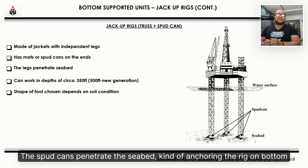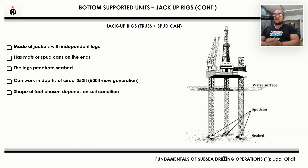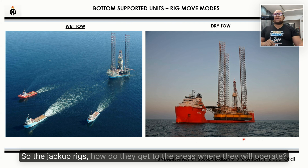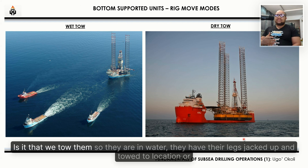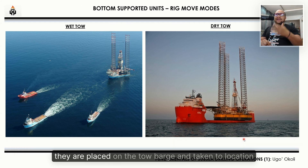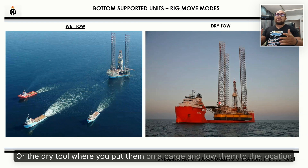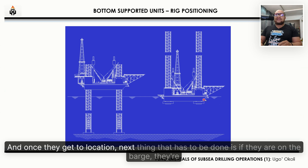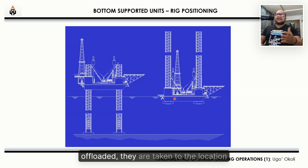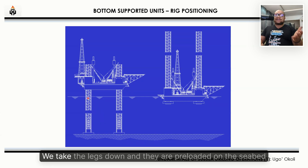The new generation jack-ups operate at about 500 feet. To get to their operating location, jack-up rigs are either wet-towed with their legs jacked up, or placed on a barge and dry-towed to location. Once at location, if on a barge they are offloaded, taken to the site, and the legs are lowered and pre-loaded on the seabed.